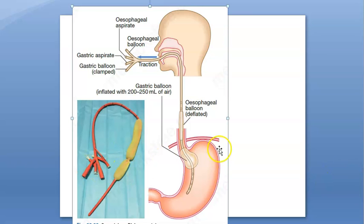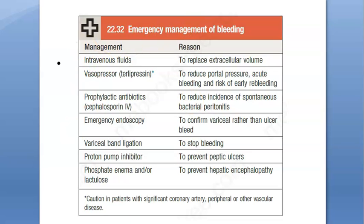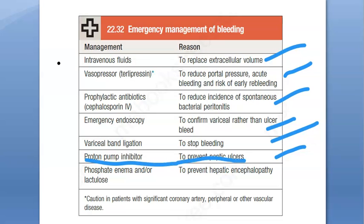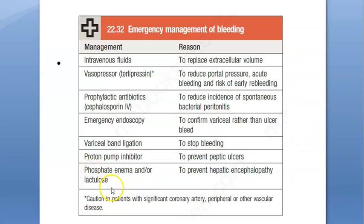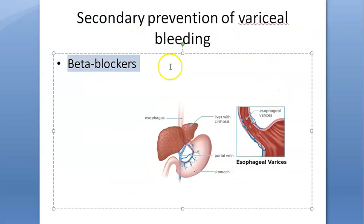To manage esophageal variceal bleeding: give IV fluids to replace lost volume, vasopressor terlipressin, prophylactic antibiotics like cephalosporin, emergency endoscopy to locate varices, variceal band ligation to stop bleeding, and proton pump inhibitors to prevent peptic ulcers. Additionally, give phosphate enema and/or lactulose to prevent hepatic encephalopathy, since blood bypasses the liver and carries toxins. In summary, for prevention give propranolol; for acute bleeding follow this full protocol.